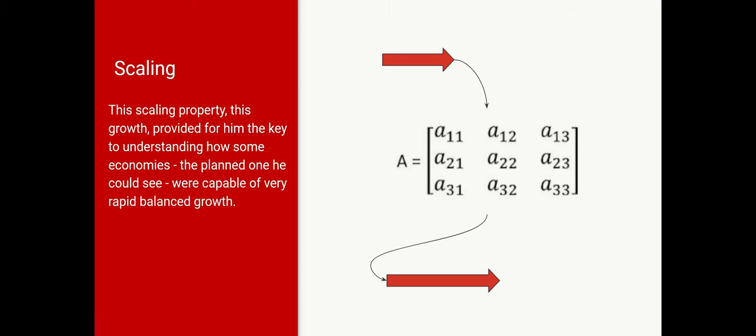Now, scaling, which occurs with the economic case, is what requires the possibility of growth. And how some economies, planned ones, are capable of very rapid balanced growth. Because at the time he was writing, that rapid growth was occurring in the USSR.